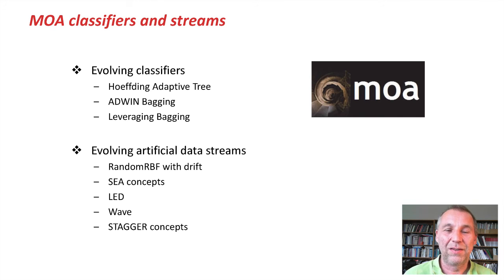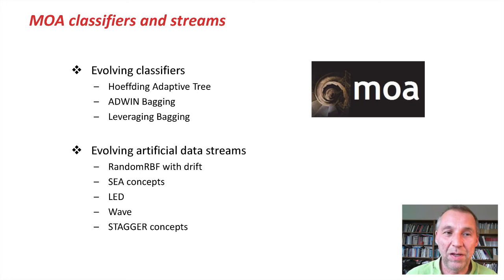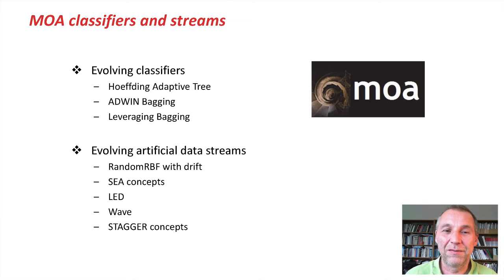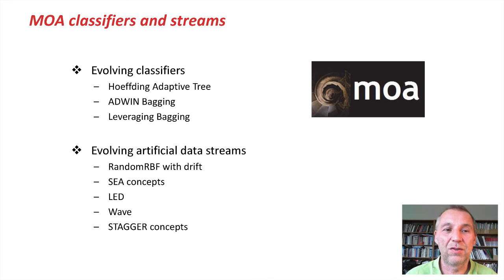In summary, we've been looking at change in classifiers: explicit change detection, the Hoeffding Adaptive Tree as a single classifier, and two variants of bagging — ADWIN Bagging and Leverage Bagging — as examples of ensembles that deal explicitly with change. I invite you to do your own experiments with MOA classifiers and change detection. In MOA you'll find stream generators that come with a component simulating change over time — for instance in the random RBF generator you get drift by having the centers of the kernels move around in space. Thank you.